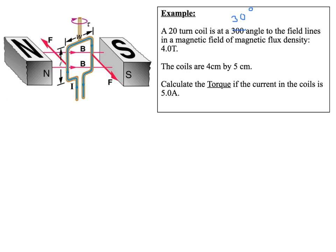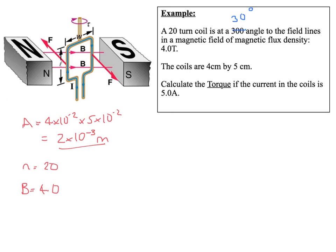So let's have a look at an example question. We've got a 20-turn coil at an angle of 30 degrees to the field lines, in a magnetic field of magnetic flux density 4.0 tesla. The coil is 4 cm by 5 cm. Calculate the torque if the current in the coil is 5 A. The area of the coil is calculated by converting into metres, giving the area. We have N equal to 20 turns, and B equal to 4.0 tesla.